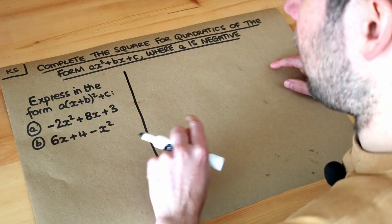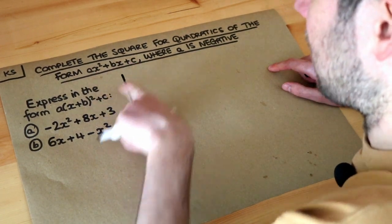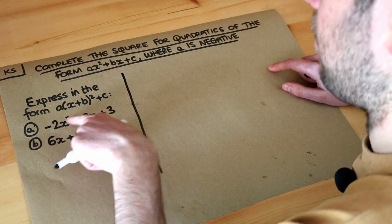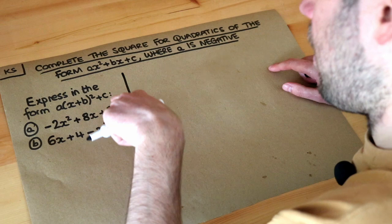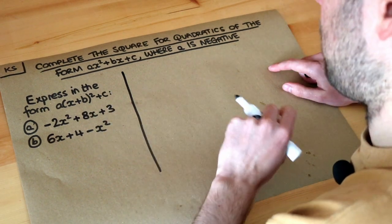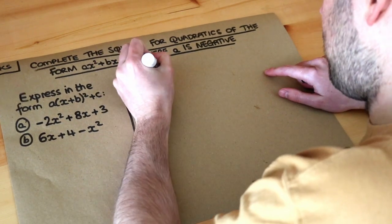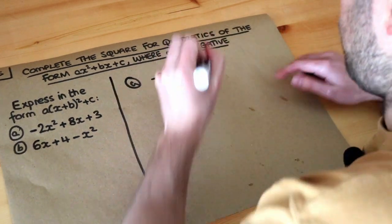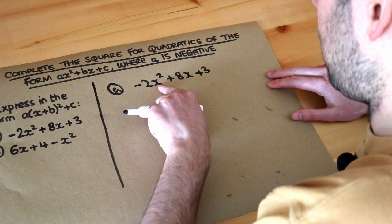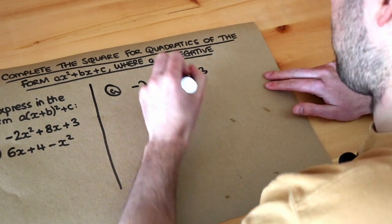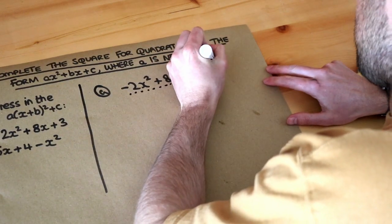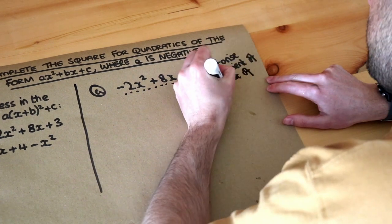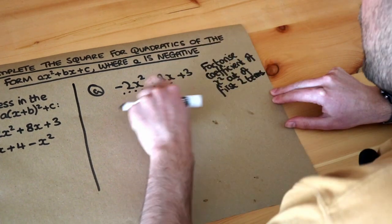The first thing to do is to get it in the form: something x squared plus something x plus something, with the x squared term first, then the x term, then the constant term. Then we factorize out the number in front of the x squared — the coefficient — out of the first two terms: the x squared term and the x term.